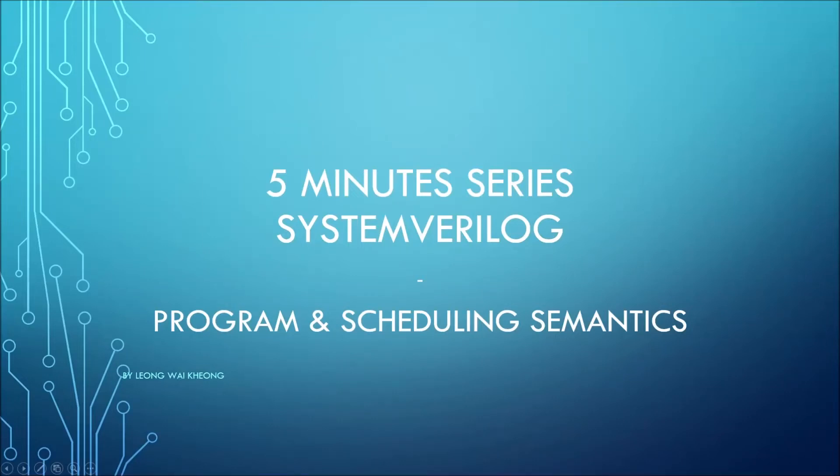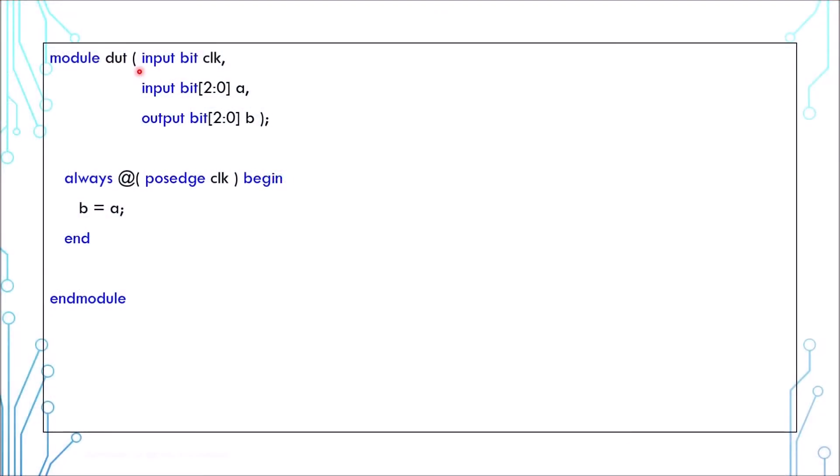Hello and welcome to SystemVerilog in 5 minutes. Today we'll talk about program and scheduling semantics. This is a simple design module. It has input clock, input A, and output B. It passes the value from A to B on every positive edge of clock.